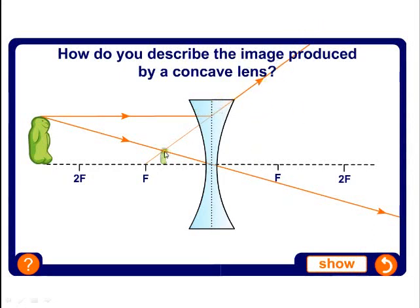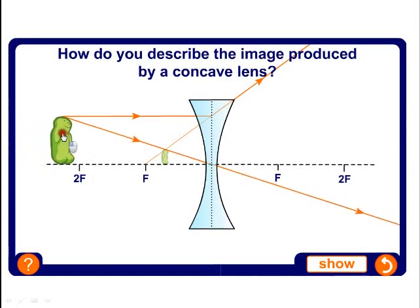We have to look through the lens to see the image. Here's our image, look at its properties: it's erect, it's diminished, and it's virtual. We have to look back through the lens to see it. This line here you'll generally see drawn as a dashed line, but in this animation it's a solid line. It's not actually a beam of light, it's a construction line that we've drawn to work out where the image will be.